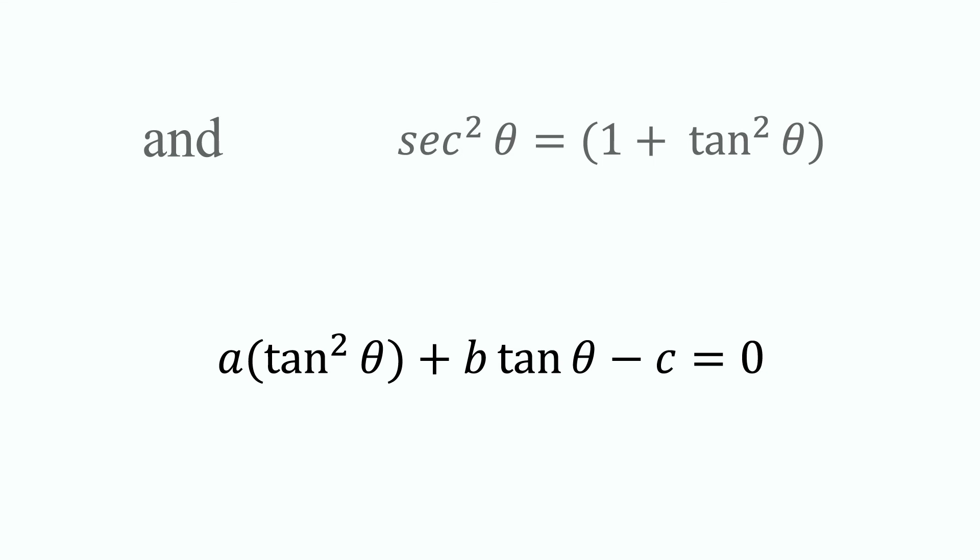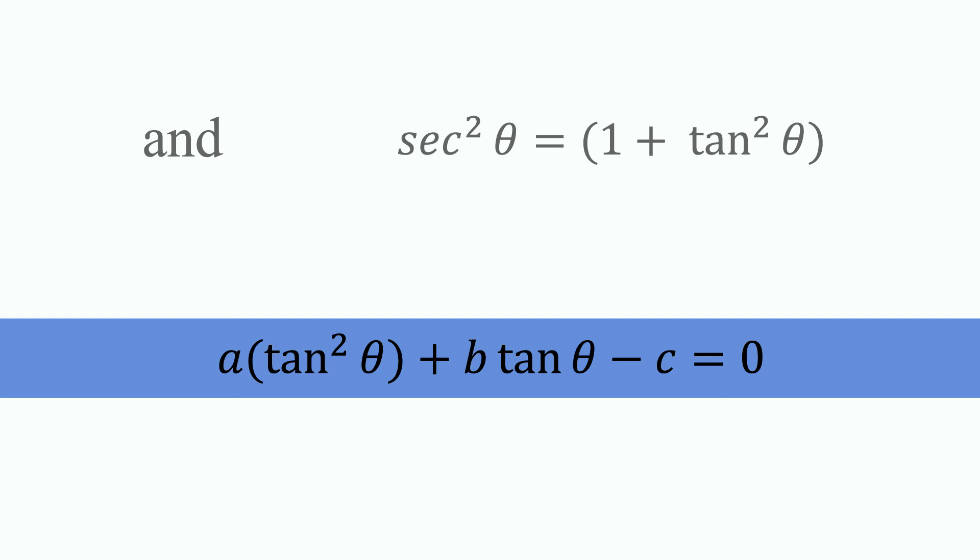This will give us negative a times tangent squared theta plus b times tangent theta minus c equals zero. This is a polynomial with tangent theta being the variable. You can use the quadratic formula to solve for tangent theta.